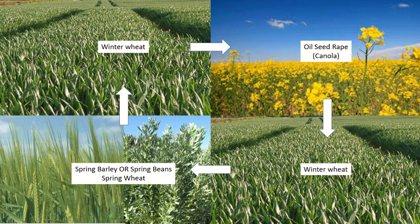Those goals could be weed management, which is a significant factor for us in looking to control black grass. It could be increasing nitrogen in the soil, controlling erosion, or increasing soil structure and organic matter.